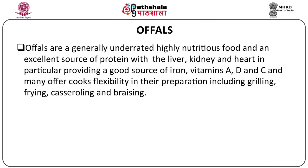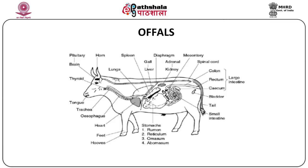Offal, because they are organ meats, have a high supply of blood and are excellent sources of protein and iron. The liver, kidney and heart in particular are good sources of iron, vitamin A, D and C, and they offer flexibility in preparing dishes. They can be cooked by a variety of methods like grilling, frying, casseroling and braising. These organ meats, because they have a high supply of blood, are good sources of iron and are highly prescribed to subjects who are suffering from anemia.